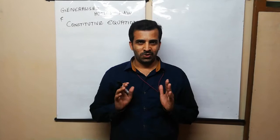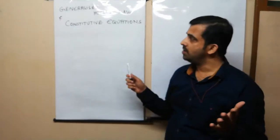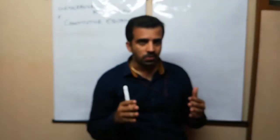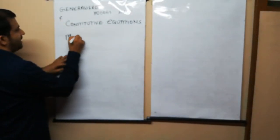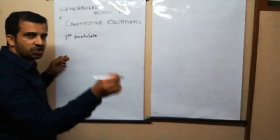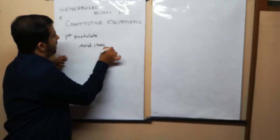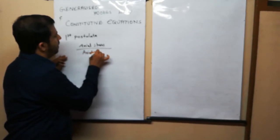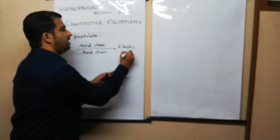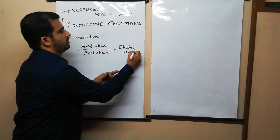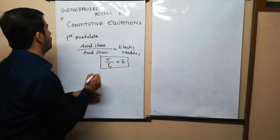Hello friends, welcome to the channel Mechanics of Solids. In this section we will deal with the generalized Hooke's law and constitutive equations. For learning the generalized Hooke's law we must go through three postulates from elementary strength of materials. The first postulate: the axial stress is proportional to the axial strain, or in other words, sigma divided by epsilon is equal to E, the elastic modulus or Young's modulus.